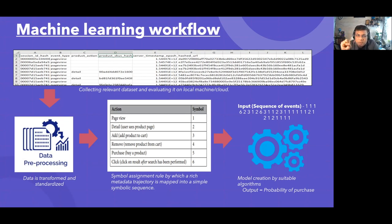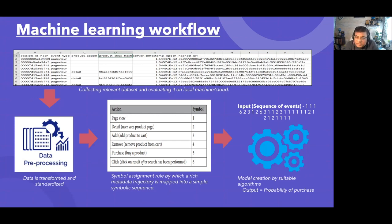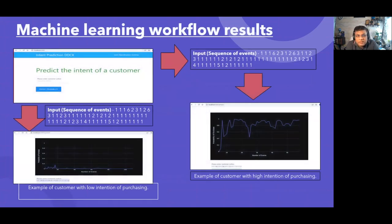Once all the data is accumulated, you use data preprocessing to make it meaningful for the machine. For example, symbol 1 is given for a page view, symbol 2 if the person viewed the product, and so on with different symbols for different events. This gives understanding of the project trajectory — how the person traversed the path. Based on that sequence, the model predicts whether the person would buy the product or not.